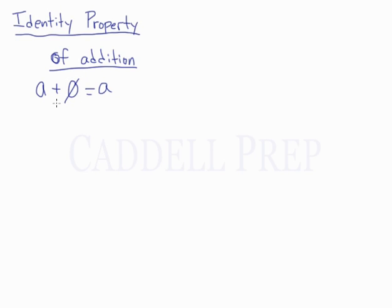So the identity is what we could do with addition to keep the same identity. So if you add 0 to a, a stays the same. It, in a way, keeps its identity.